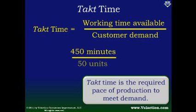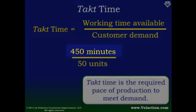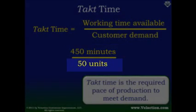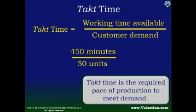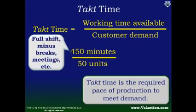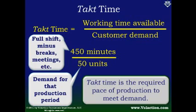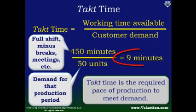Let's look at an example. Let's say you have 450 minutes available and 50 units to produce. The 450 is basically a full shift minus all the breaks, meetings, startup time, cleanup time, and that sort of thing that takes away from actual production time. And the 50 is the expected demand during that period. So, with just a little bit of math, you now know that you have 9 minutes to produce each item for your customer.